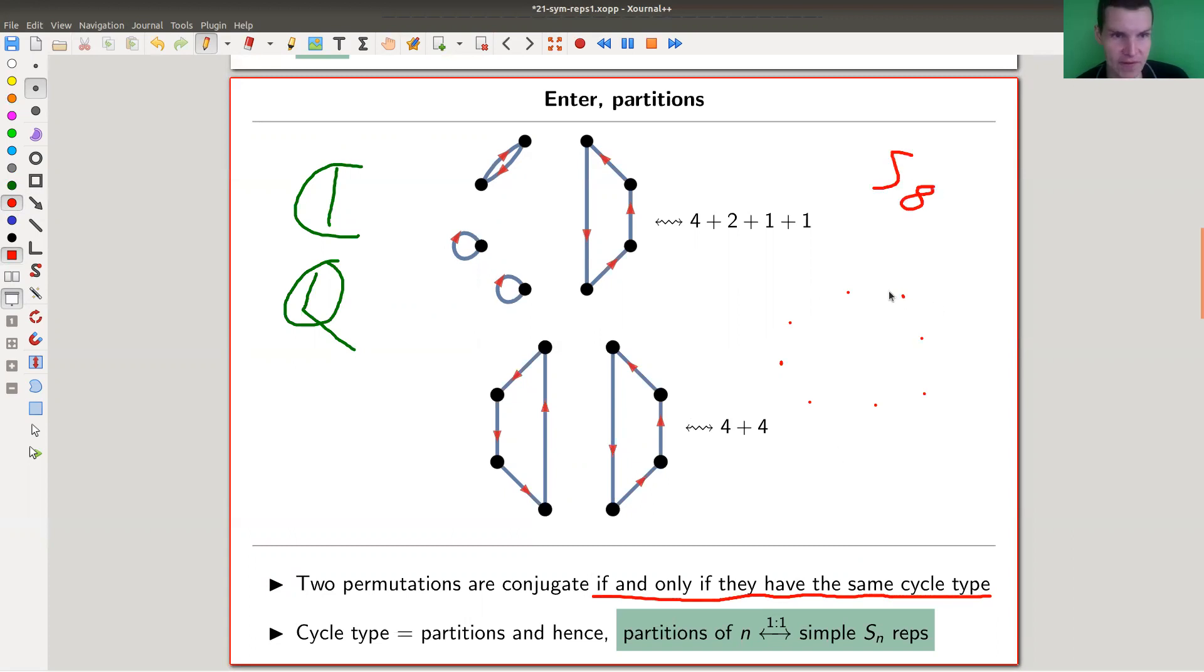This is supposed to be a circle. This is a horrible circle of course. And you connect them in some fashion, whatever, something like this. And that's a cycle type.